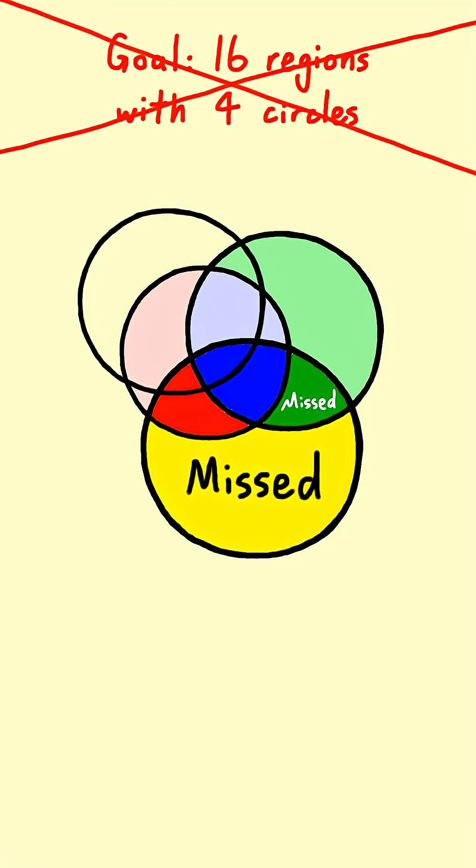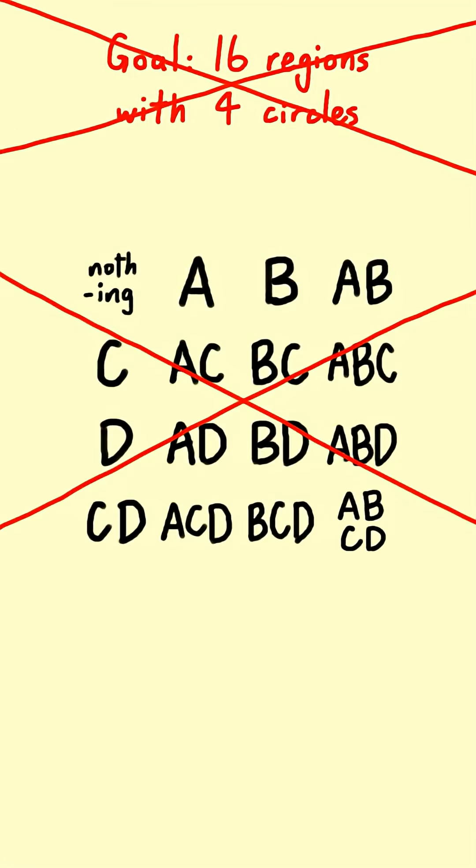And since 16 regions isn't possible, neither is 16 different letter combinations. So there will always be some combinations missing.